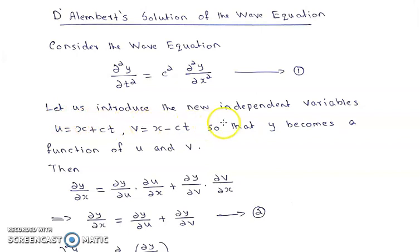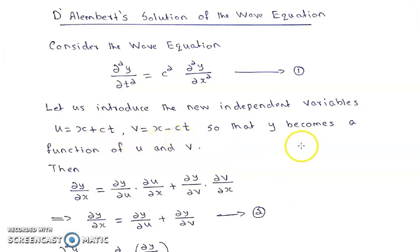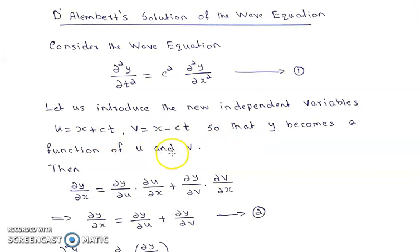Let us introduce the new independent variables: u = x + ct and v = x − ct, so that y becomes a function of u and v. That is, after introducing these two new variables, y becomes a function of u and v, and u and v are functions of x and t.